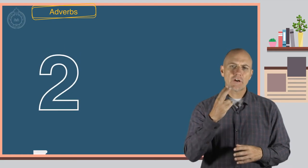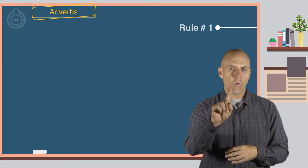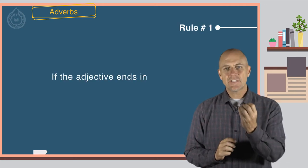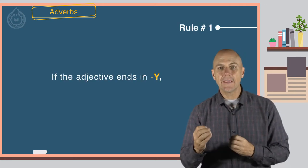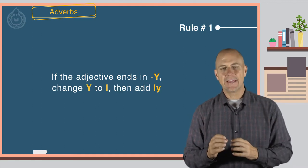There are two spelling rules you need to be aware of. Rule number one. If the adjective ends in y, change the y to i. Then add ly.